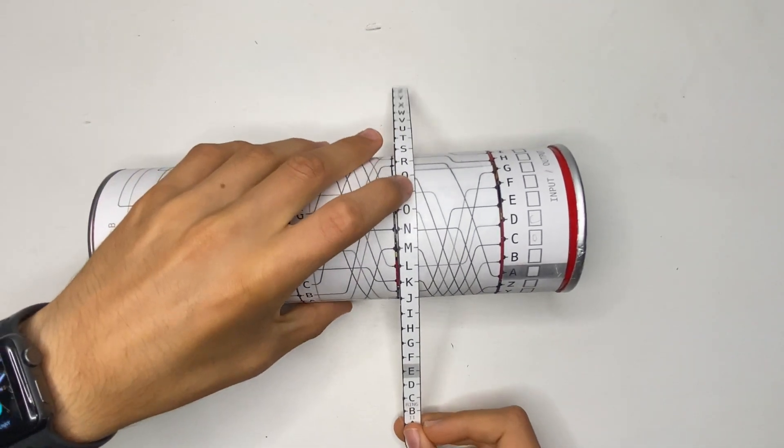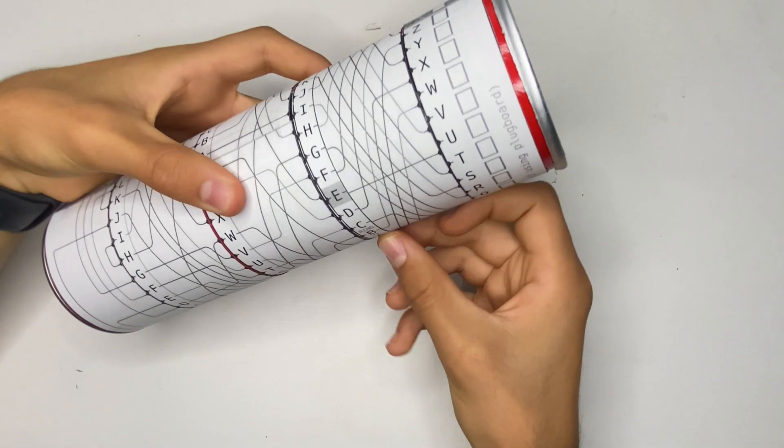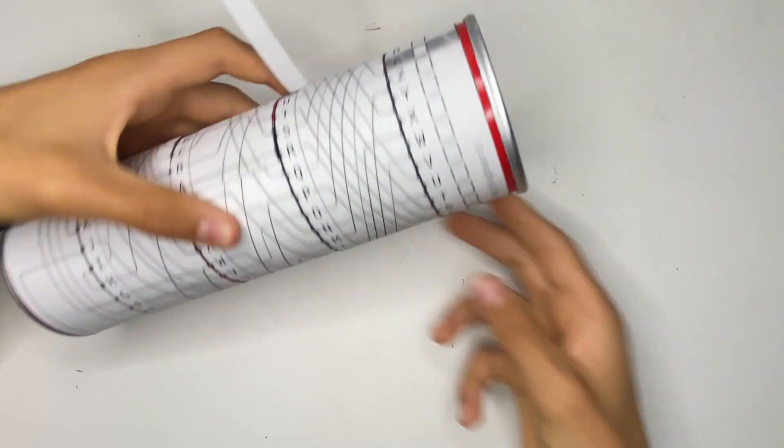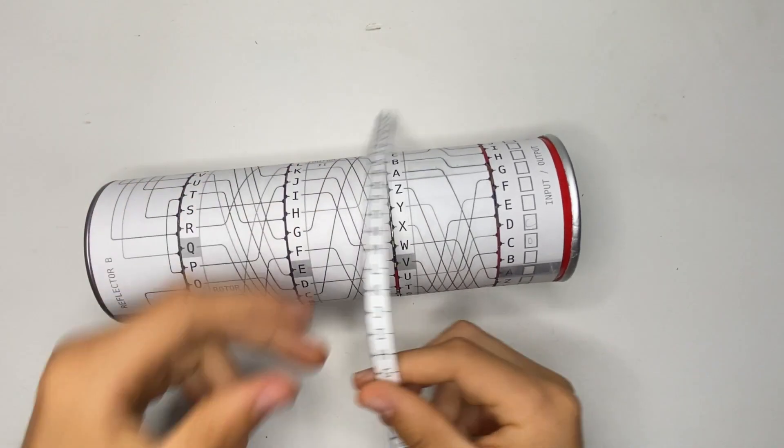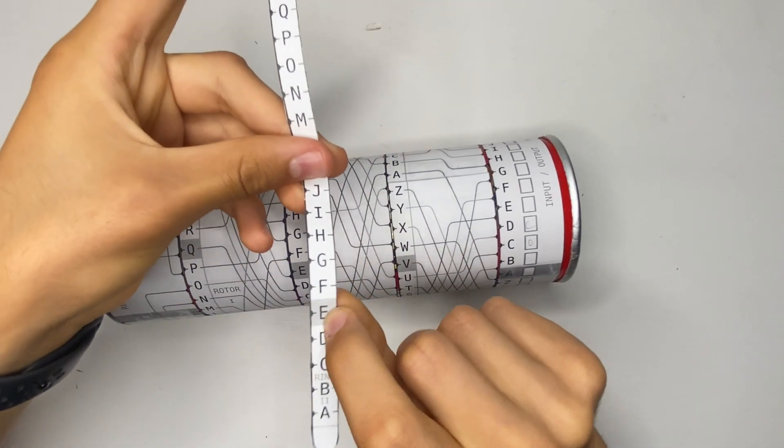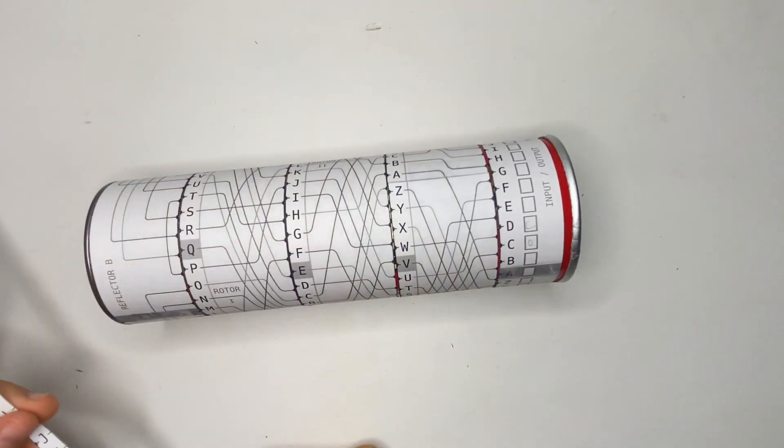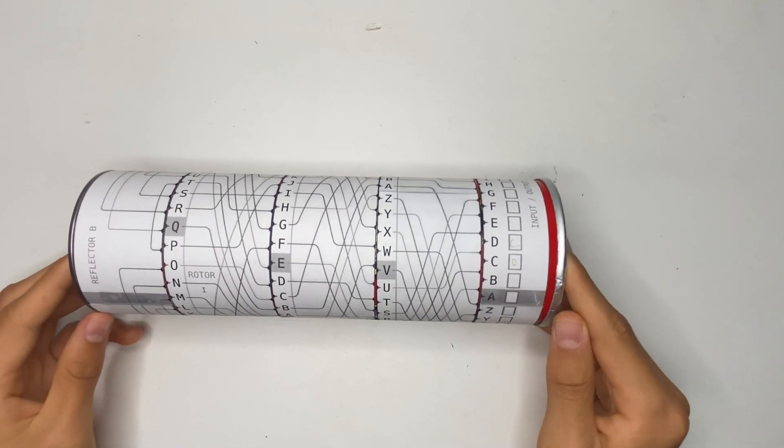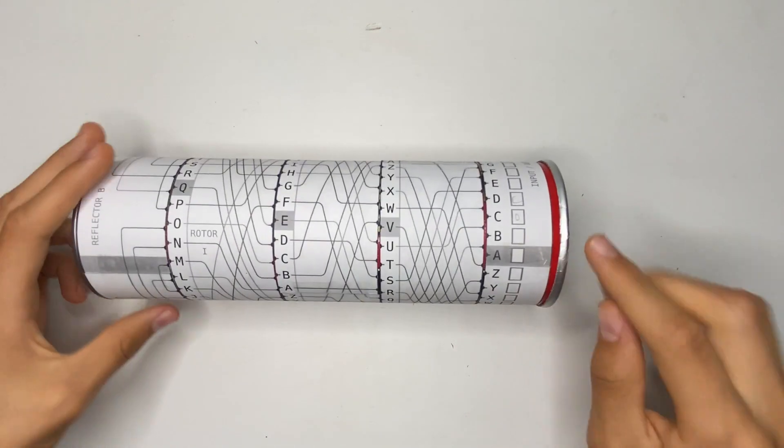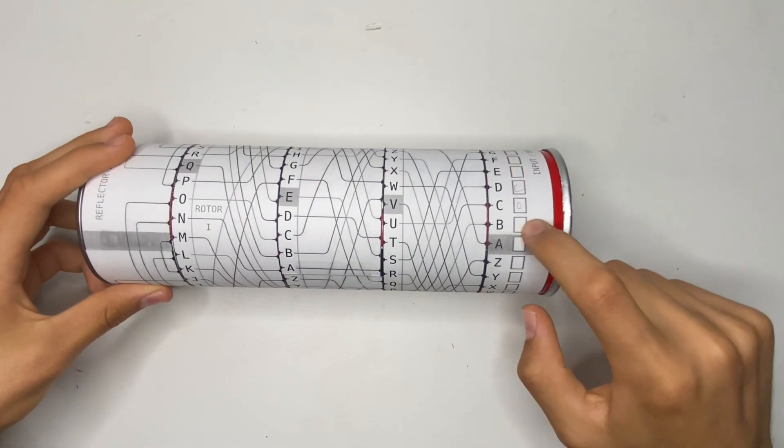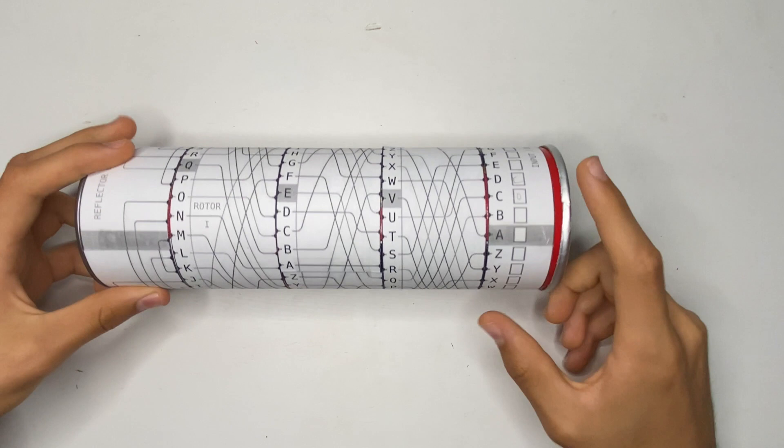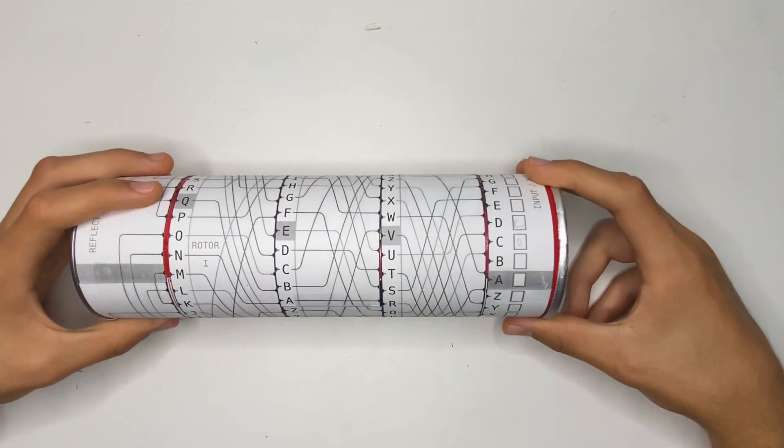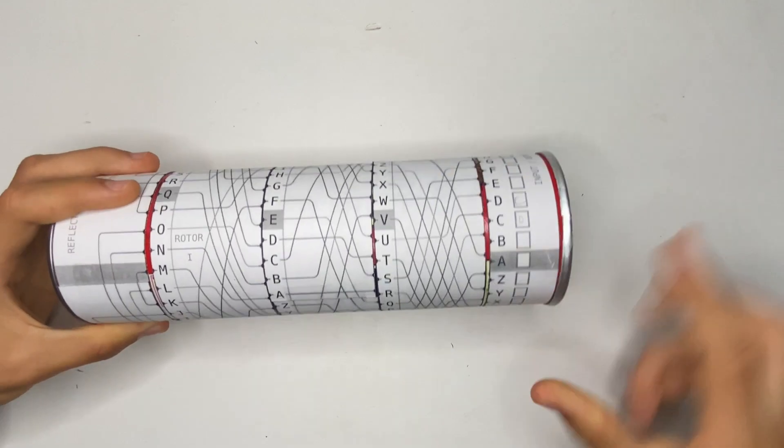So what you can do is put this ring, like on top of here, and connect it the same way as before. And that will just move where the gray tab is. So that's just changing the ring settings on the Enigma machine. And it might also help to tape this input, output, and maybe even the reflector down because they should always be staying lined up.